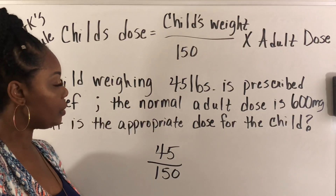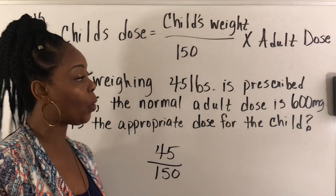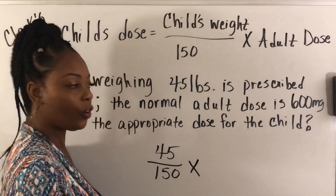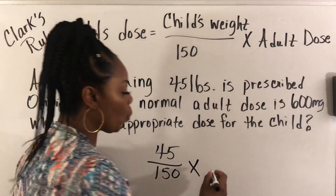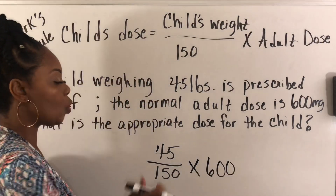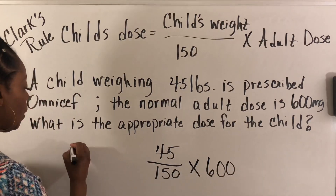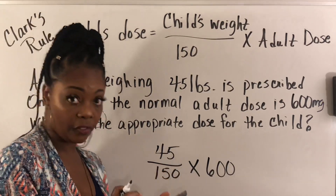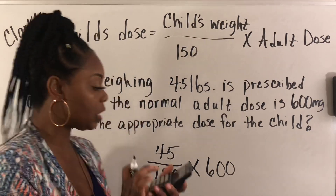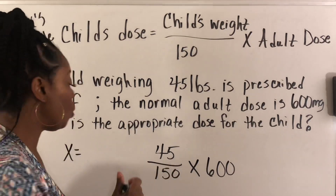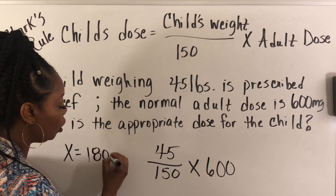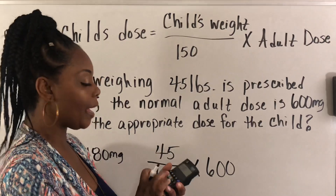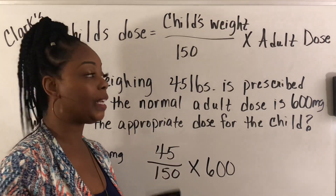The child weighs 45 pounds. According to Clark's Rule, we divide by 150, then multiply times the adult dose of 600 milligrams. So: 45 divided by 150 times 600. That gives you 180 milligrams.